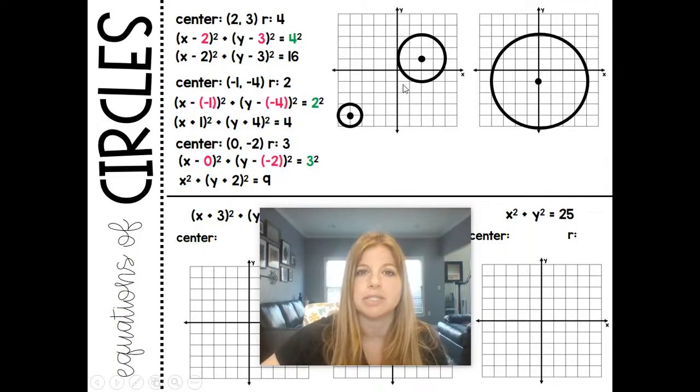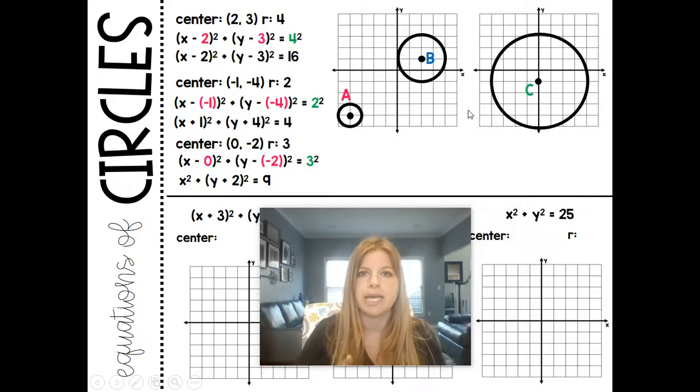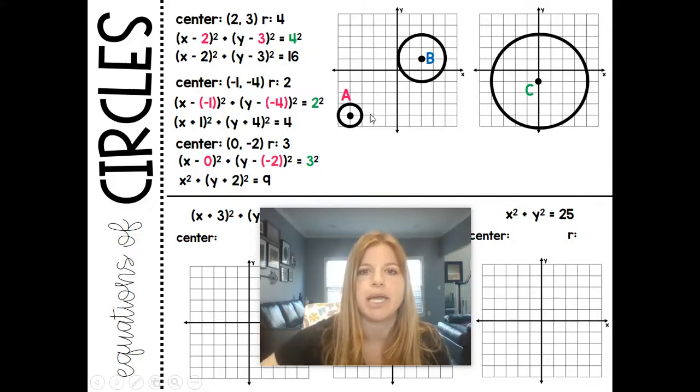So now let's take a look at these circles here. What if I actually gave you a circle, and I asked you to write the equation for that circle? Well, I'm going to call these circles A, B, and C. And let's look at circle A first. Circle A has a center at negative 4, negative 4.